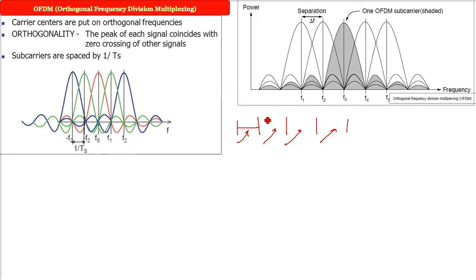Orthogonal frequency division multiplexing, the carrier centers are put on orthogonal frequencies. Orthogonal means, let me give you an analogy. This is the Cartesian coordinate system, you can say 3D coordinate system. So x is orthogonal with z, x is orthogonal with y and y is orthogonal with z. So we can have x, y, z together though they are orthogonal.